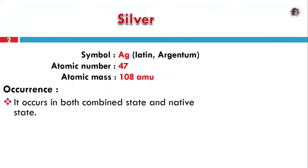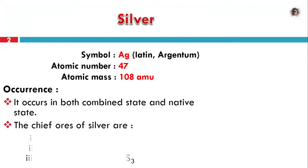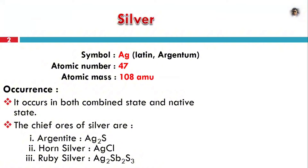In occurrence, silver occurs in both combined state as well as in free state. The main ores of silver are Argentite (Ag2S), Horn Silver (AgCl), and Ruby Silver. These are the chief ores of silver from which silver can be extracted.